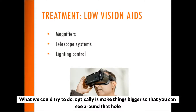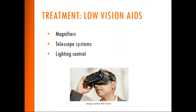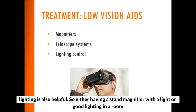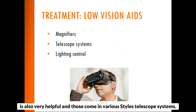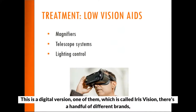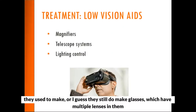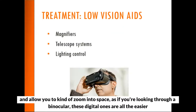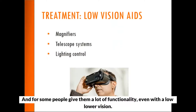Low vision aids are essentially magnifiers. For that central hole in people's vision, we try to make things bigger so you can see around that hole. That ranges from a hand magnifier to a stand magnifier with a light, and good lighting in a room is also very helpful. Telescope systems — like the digital version called Iris Vision — are another option. There are a handful of different brands. These digital ones are a little bit easier to use because they're hands-free and lighter weight, giving some people a lot of functionality even with lower vision, though they can sometimes be difficult to adjust to.